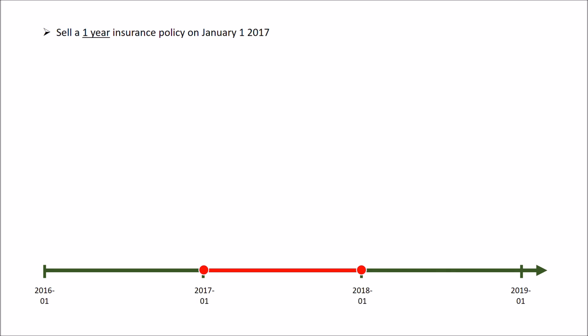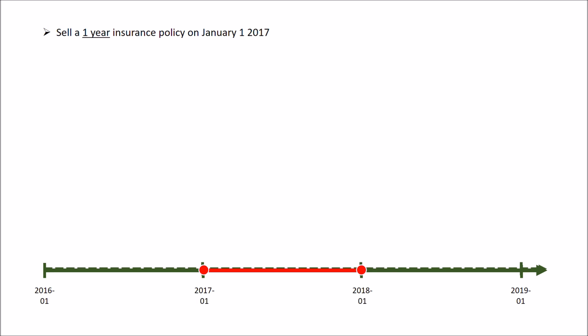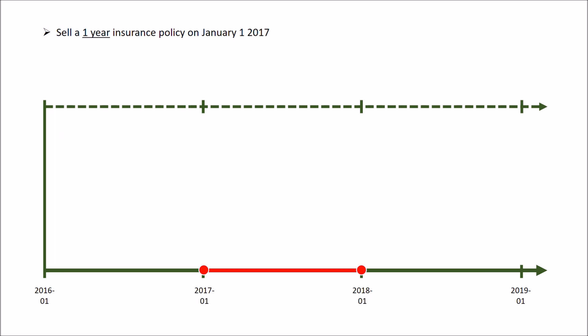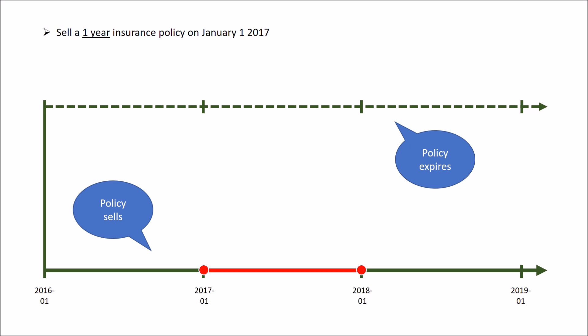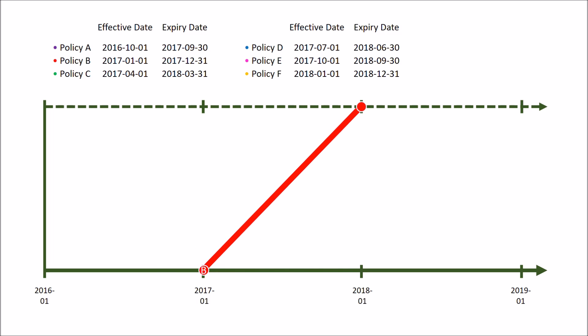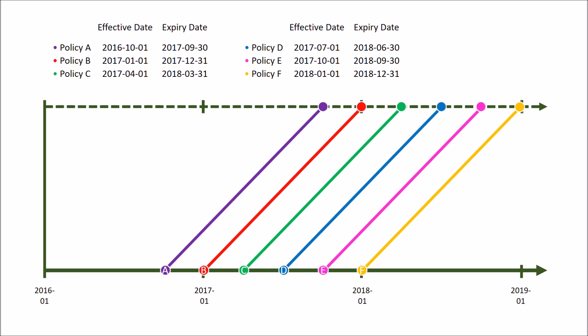Right now, the image you should be seeing — if my animations are working properly — looks a lot like a flat line. To make it two-dimensional, we double up the timeline. The bottom line represents the moment the policy sells, the top line represents the moment when the policy expires, and we draw a diagonal line from start to finish to represent the policy. Now if I add a few more policies, are you starting to see some parallelograms?